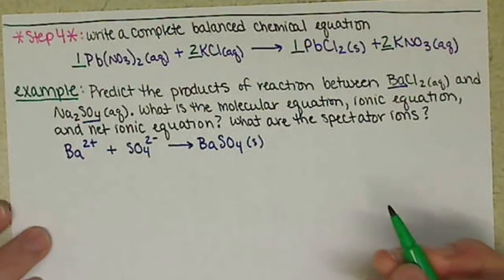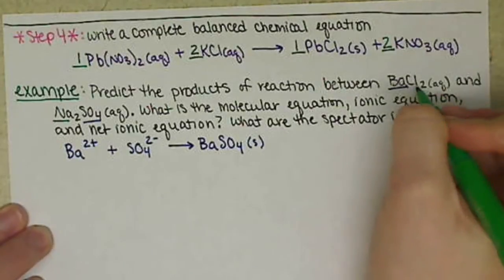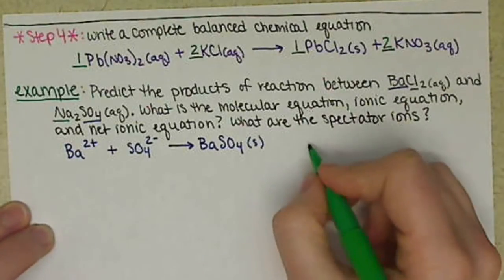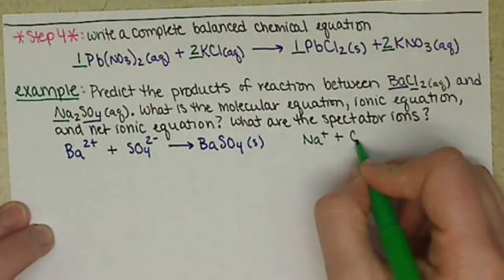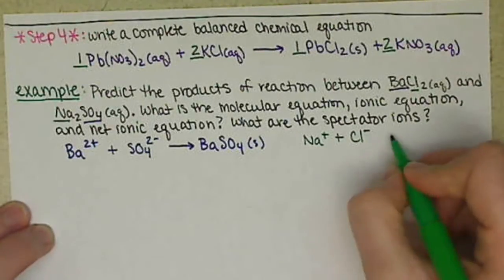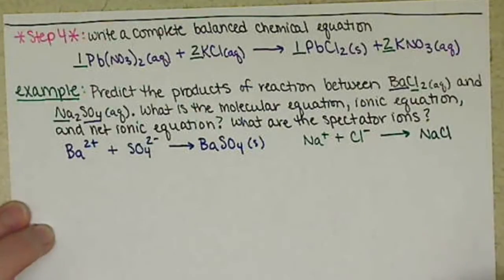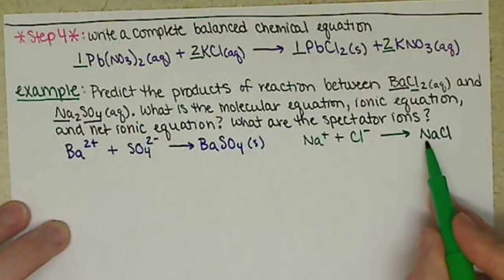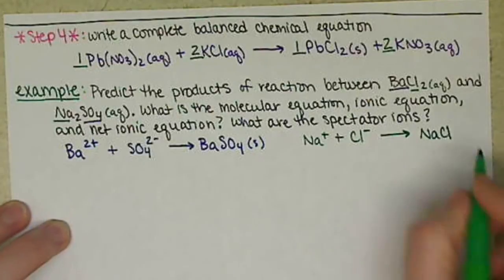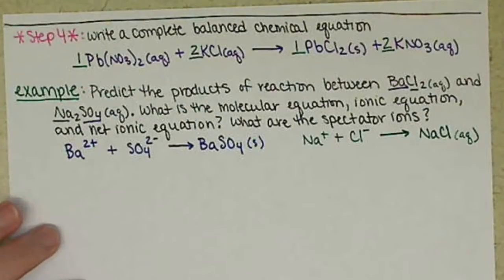Our other combination: we have the sodium ion combining with the chloride ion — Na⁺ plus Cl⁻. That is also a 1-to-1 ratio, so we have NaCl. NaCl is soluble because anything combined with the sodium ion is going to be soluble, so it stays aqueous.